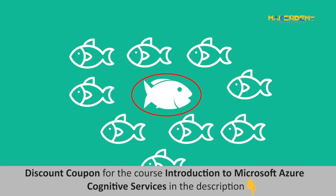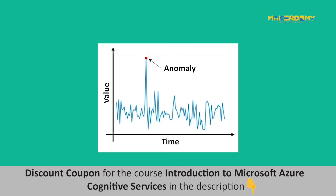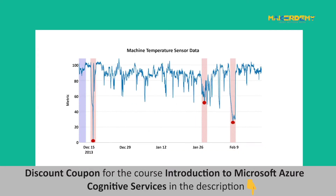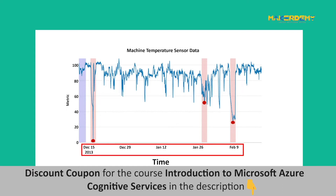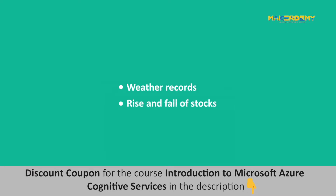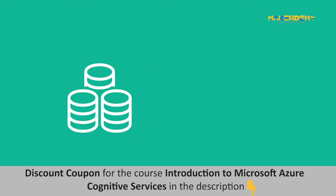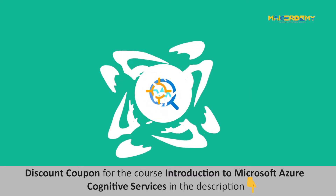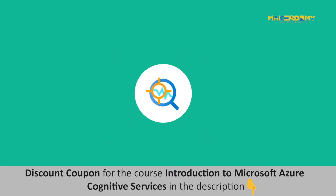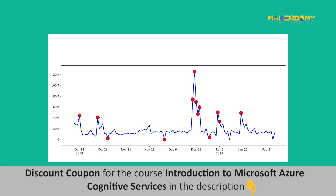Most of the applications we use need to detect anomalous behavior and then take corrective action. The basic working of an anomaly detector is that it simplifies the process of detecting anomalies in time series data. Time series data is a collection of observations obtained through repeated measurements over time. On plotting the points on a graph, one of our axes will always be time. Weather records, rise and fall of stocks, and patient health metrics are all time series data. These are large volumes of data, so there is a higher probability that there are many errors, hence anomaly detection is used before performing any insight into the data.